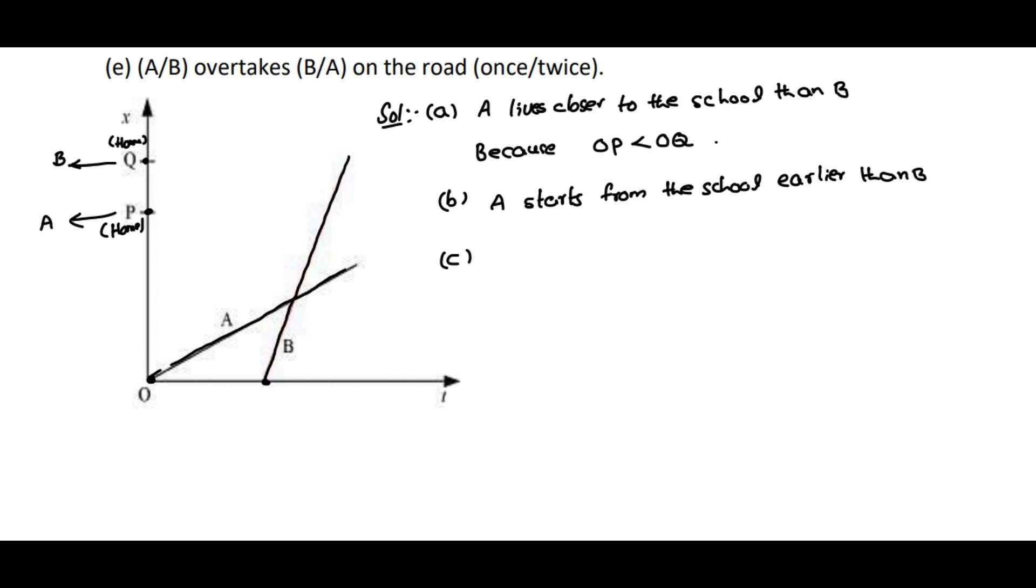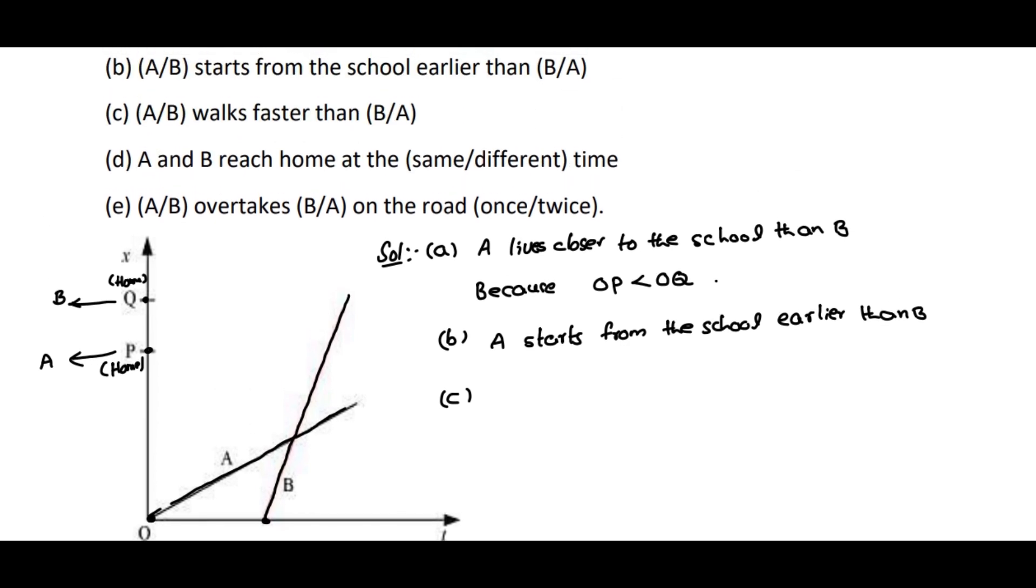Coming to C: A or B walks faster than B or A. If you observe both graphs, the slope of B is higher compared to the slope of A. Therefore, the answer is B - student B walks faster than A, because the slope of the x-t graph for B is more than A.